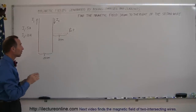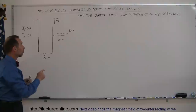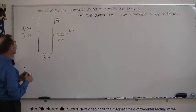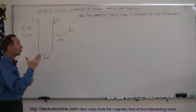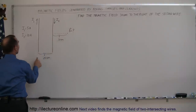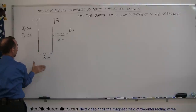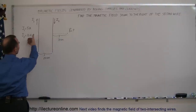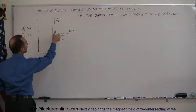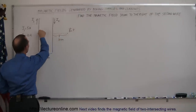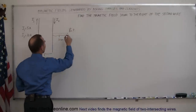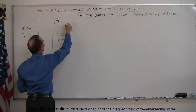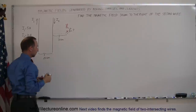Let's first find the direction of the magnetic field caused by each wire at that location. Using the right-hand rule, if the current goes up in the first wire, I use my thumb to represent the current going up, then my fingers curl in the direction of the magnetic field. So to the right, the magnetic field will be into the board due to the first wire — that would be B1, the magnetic field caused by wire 1.